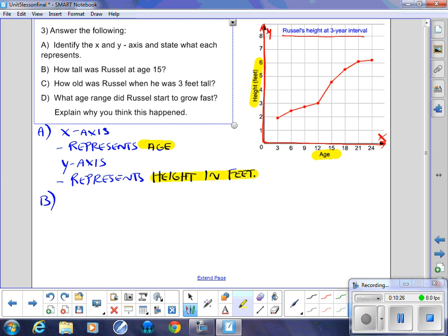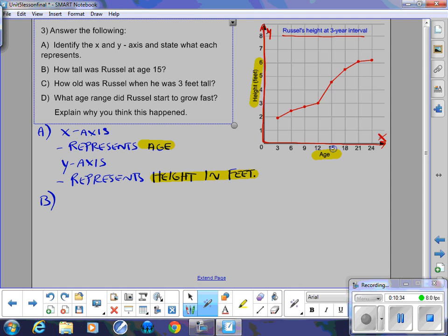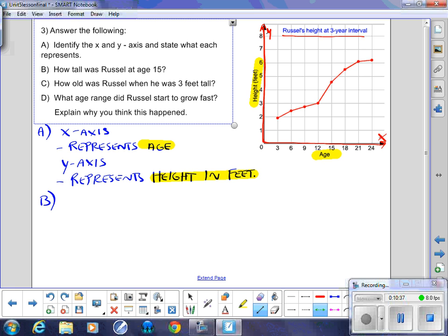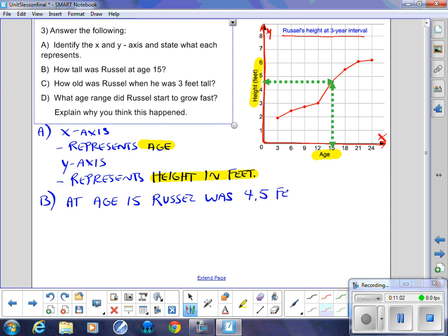So question B. How tall was Russell at age 15? So we need to find age 15, which is clearly marked here. And what we're going to have to do is we're going to take our eyes and we're going to move our way up. So I'm going to use a line here to help demonstrate what I'm doing. So I'm looking up to find the coordinate that corresponds with 15. Once I find that, I'm going to zoom across. And to me, it looks halfway or close enough. So therefore, at age 15, Russell was 4.5 feet tall.